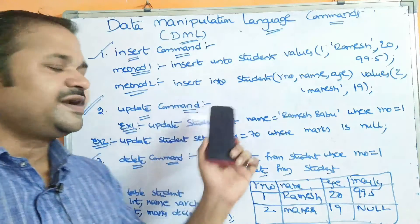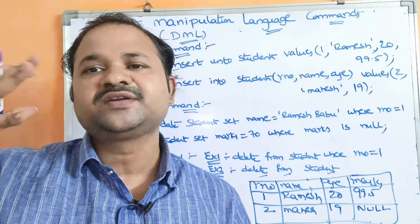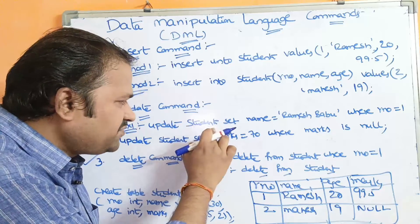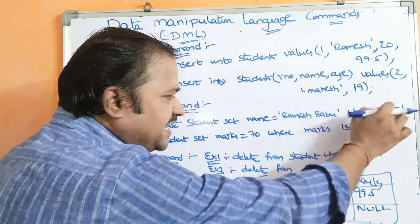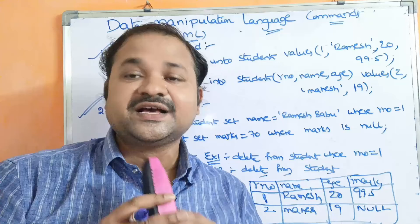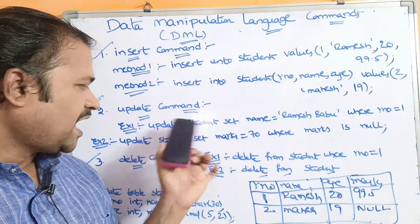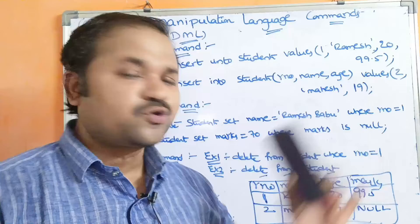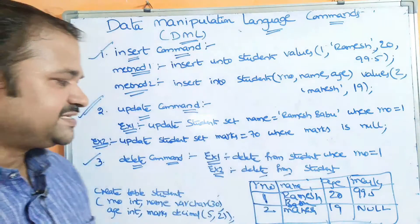The second command is UPDATE command. It is useful in order to update the existing data in the table based upon some condition. Here we have two examples. First example: UPDATE student SET name = 'Ramesh Babu' WHERE roll_number = 1. So if the roll number is 1, then we have to update the name as 'Ramesh Babu'. Based upon the roll number, here we are modifying the name. This is the advantage of the UPDATE command.